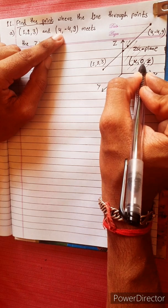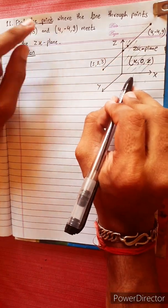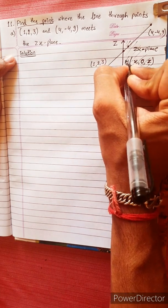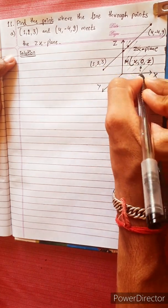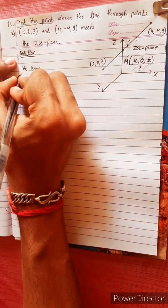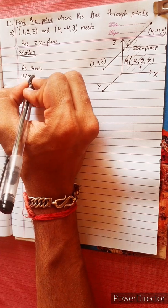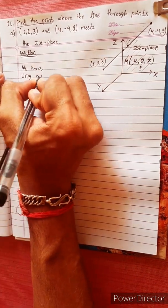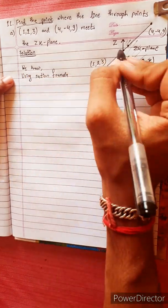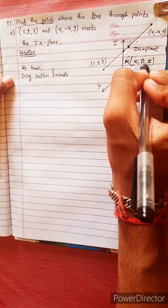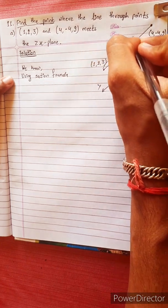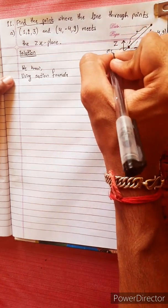Since the point lies on the ZX plane, its y-coordinate is zero. So the coordinates of the point are of the form (x, 0, z).